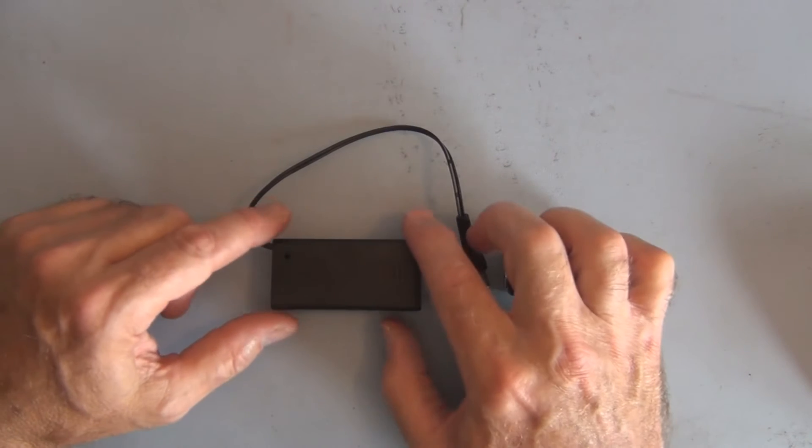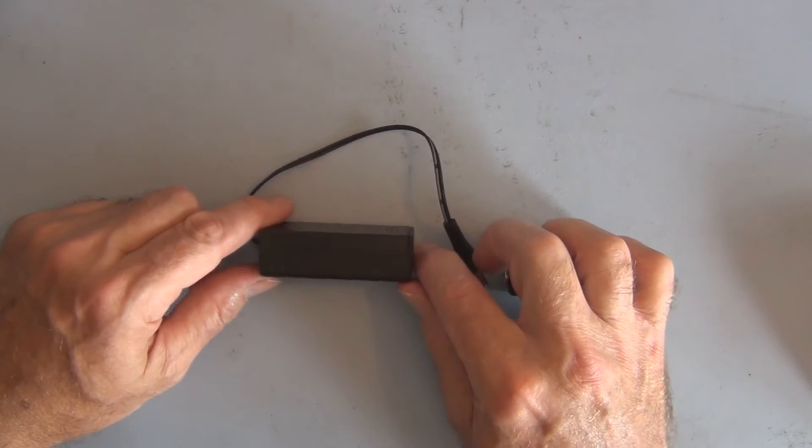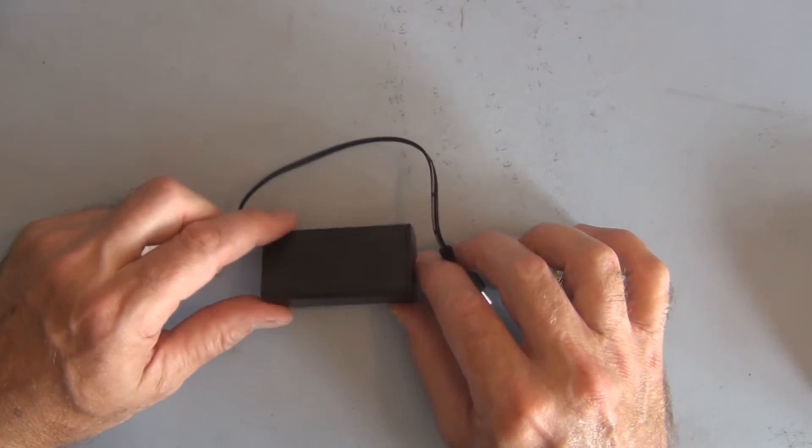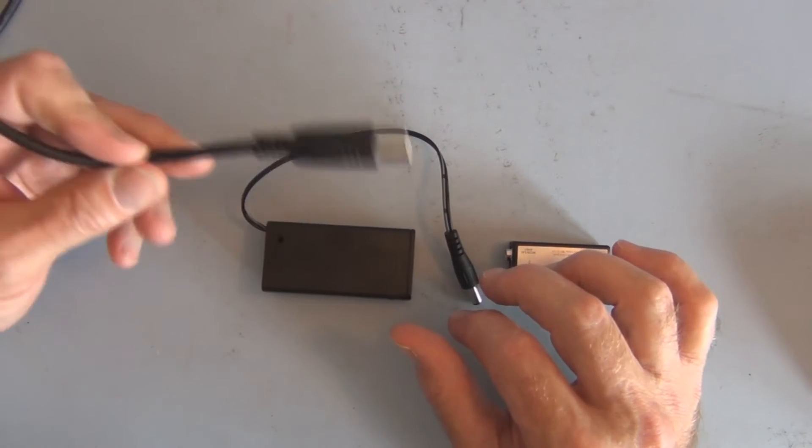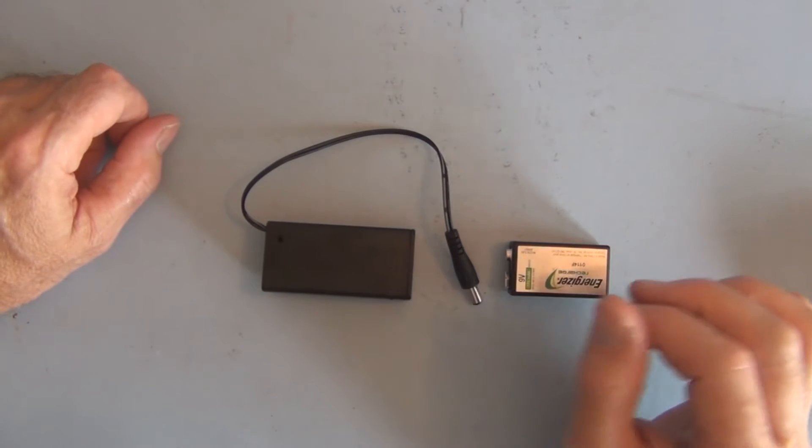But before we look at the circuit again, I'm going to be powering my Arduino Uno a little differently this time. I have this nine volt battery holder I purchased from Adafruit, so I'm no longer going to be tied through the USB to the laptop for power.